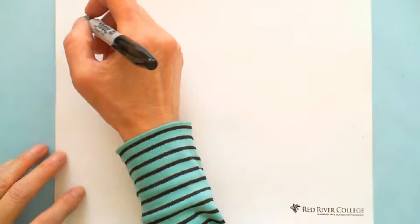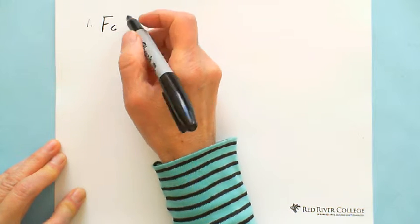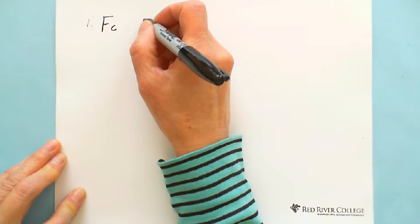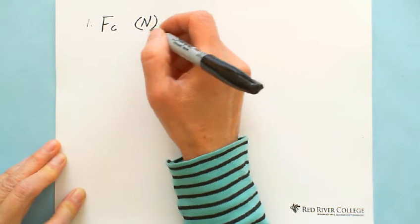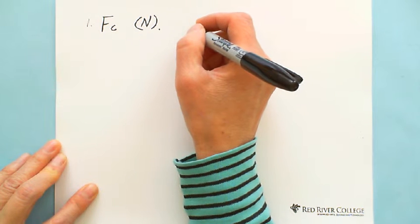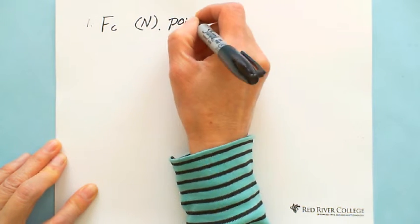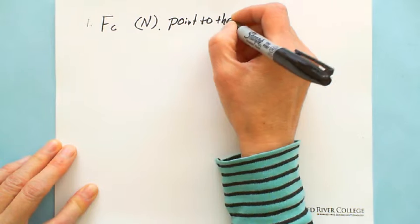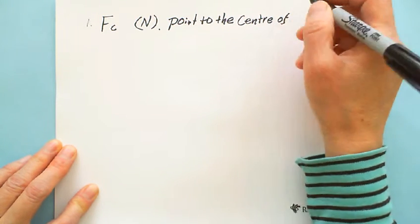First of all, I will talk about centripetal force. Centripetal force is a force — we use FC, so the unit is Newton, same unit as force. The direction of centripetal force points to the center of the circle.